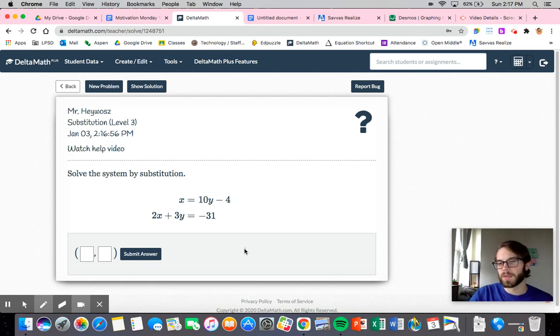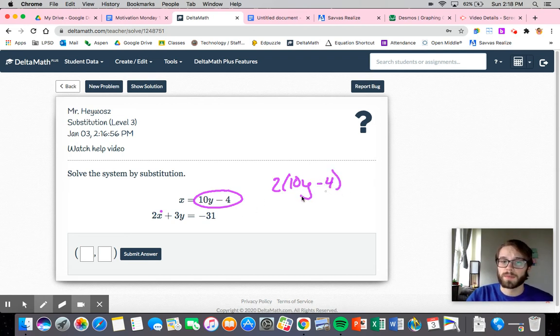Usually if I have to rewrite, I don't bother using substitution. I would use the next method that we're going to talk about, elimination. But that's kind of your own personal call. All right. So let's plug this in. I know x is equal to this, so I can replace this x with 10y minus 4. So I have 2 times 10y minus 4. And it's very common to forget the minus 4. A lot of people sometimes try to move things around and then completely forget about it. But you don't have to move anything around at all in this problem.